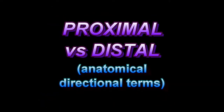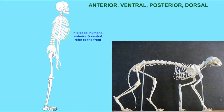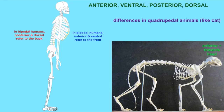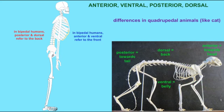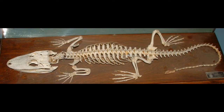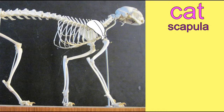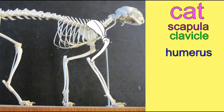Anatomists use precise directional terms, and when referring to position on a limb, instead of using superior and inferior, the directions are given as proximal if moving towards the attached origin of that limb or of a specific bone in the limb, or distal when moving away from that origin or attachment point.